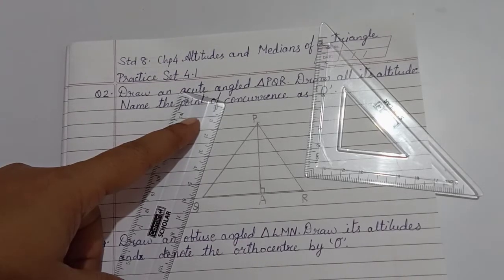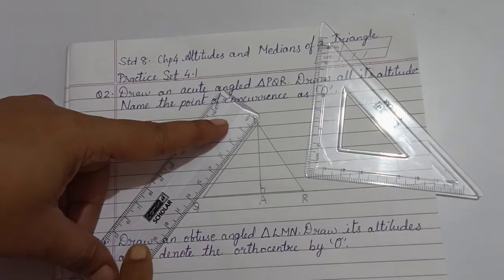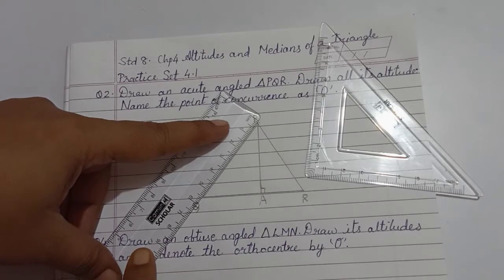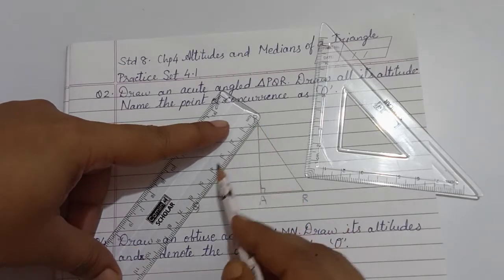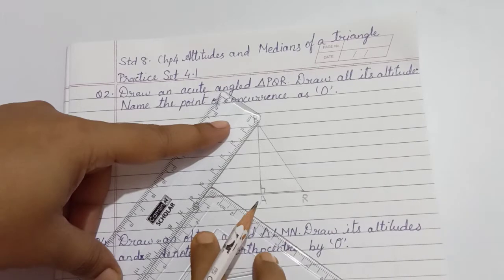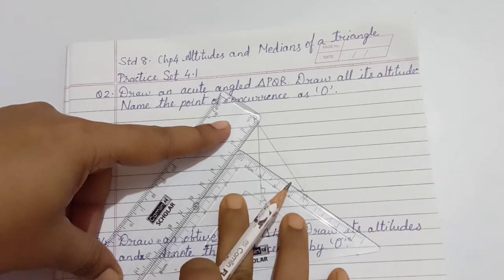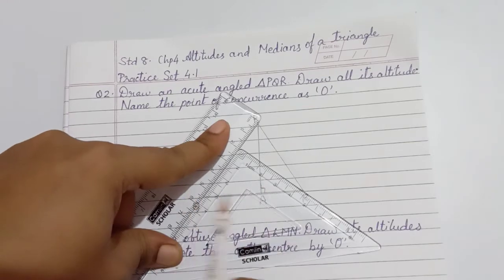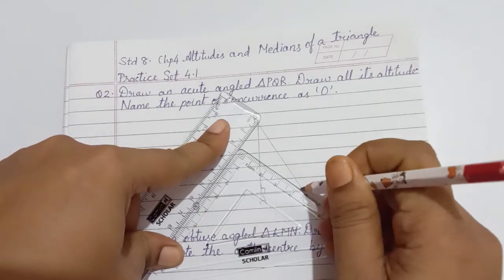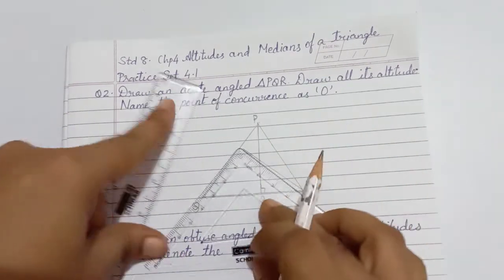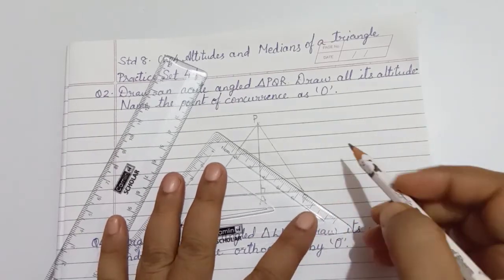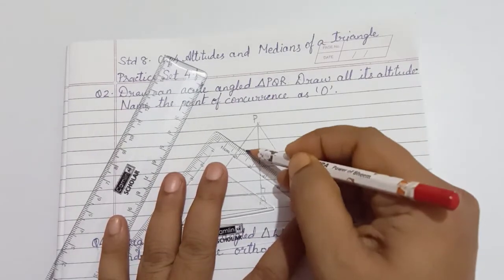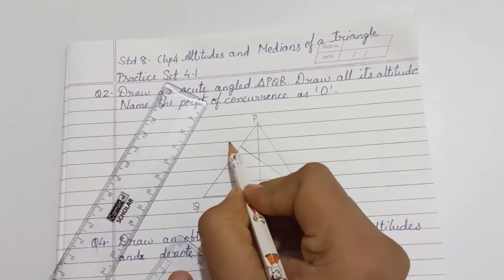For the second altitude, align the scale with base PQ. Slide the set square till point R. Hold the scale and set square and drop the next altitude. Label it as B.